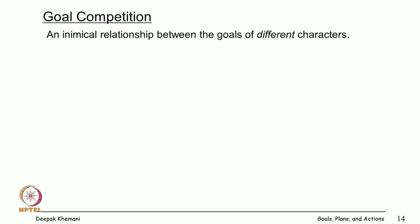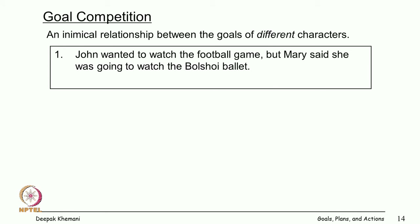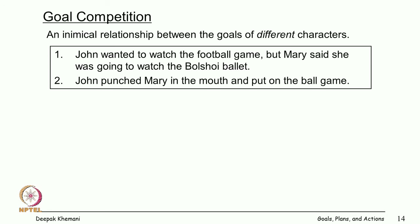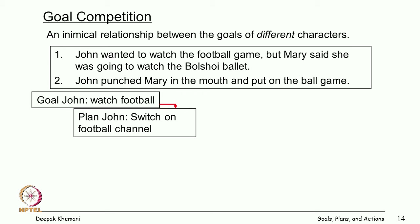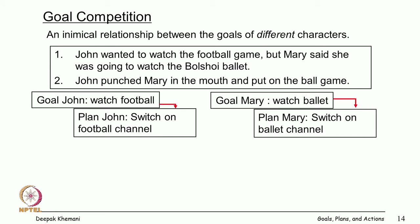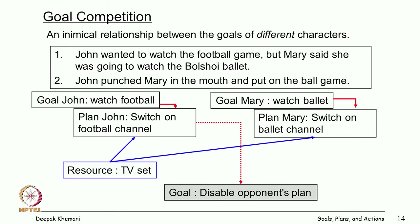Competition is between different characters. For example: John wanted to watch the football game, but Mary wanted to watch the ballet. He punched Mary in the mouth and put on the ball game. How do you understand this? It is a competition: John has a plan to switch to the football channel, Mary has a plan to switch to the ballet channel, they have only one television, and John's sub-goal was to disable the opponent's plan.